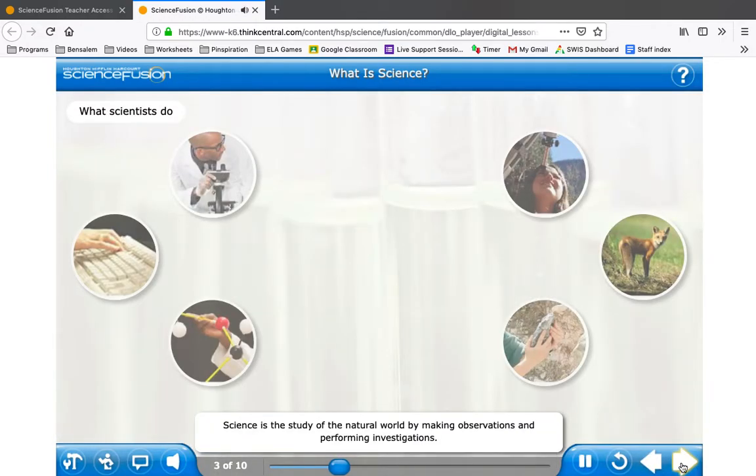Science is the study of the natural world by making observations and performing investigations. Investigations allow scientists to gather evidence, or documentation, about the natural world. They use this scientific evidence to try to explain how and why things happen. Click the pictures to learn about ways that scientists conduct investigations.